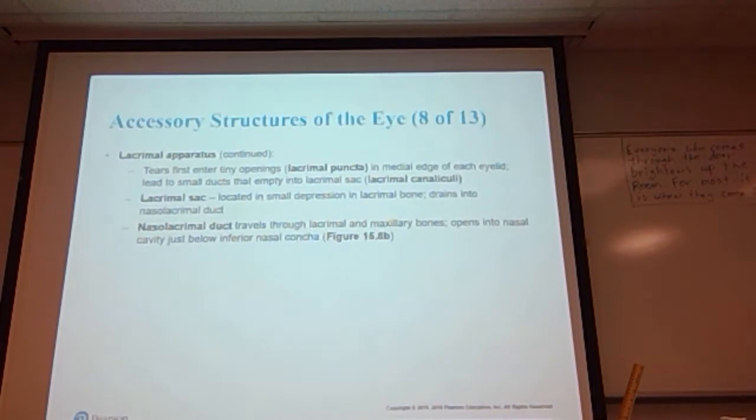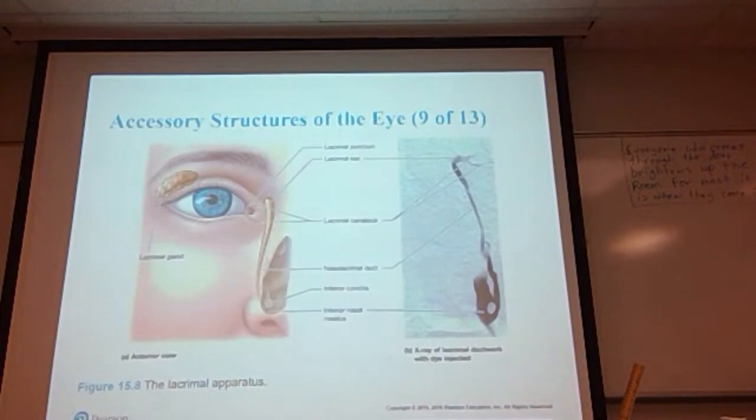One of the reasons your nose starts to run when you're crying is because all of those tears are going down into the nasal cavity. The tears first enter tiny openings called the lacrimal puncta in the medial edge of each eyelid, lead to small ducts that empty into the lacrimal sac. The lacrimal sac is located in a small depression in the lacrimal bone, then drains into the nasolacrimal duct. From the nasolacrimal duct, it travels through the lacrimal and maxillary bones and opens into the nasal cavity just below the inferior nasal concha bone.